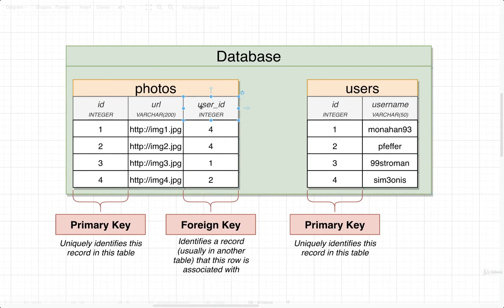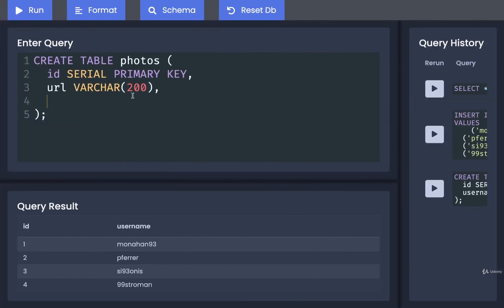Then after that we're going to add in our foreign key column. We're going to call this column user_id and it will contain a type of integer. We are not going to use that same serial that we used for the id column, because if we mark user_id as serial, that means Postgres is going to try to assign a value to it automatically, and we don't want that. We want to be able to specify exactly which user provided a given photo.